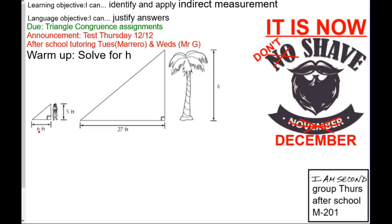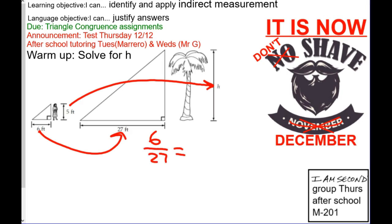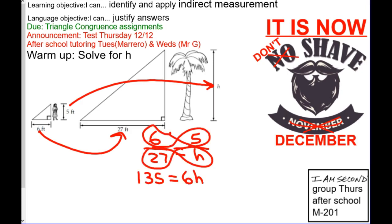For indirect measurement, we label corresponding sides and make them into fractions. 6 corresponds with 27, and 5 corresponds with h. Then we cross multiply: 5 times 27 is 135, and 6 times h is 6h.